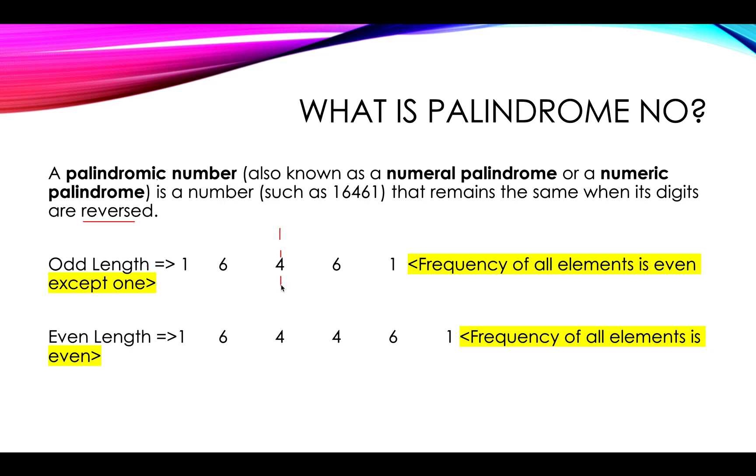Here you will see that in odd length palindromic number, all the frequency of all elements is even except for one which is a middle element.